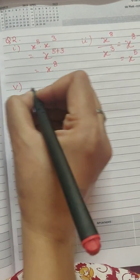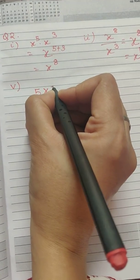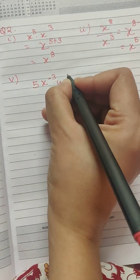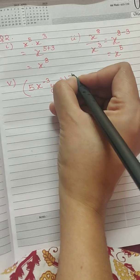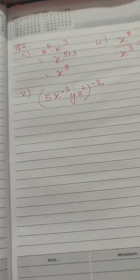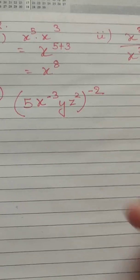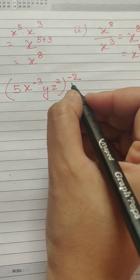One more sum I will show you from here, which is 5x to the power minus 3 yz square, whole raised to the power minus 2. Here notice one thing: more than one variable is involved. So what we do here is we first look at this one, which is negative.